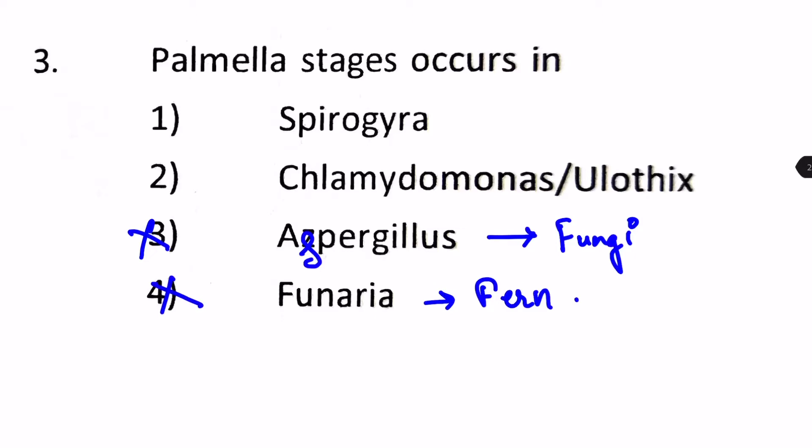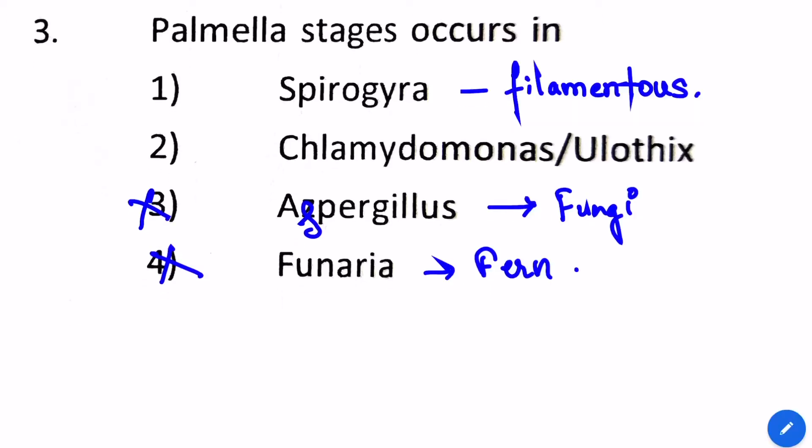The next one, we have Spirogyra and Chlamydomonas or Ulothrix. Spirogyra is actually a filamentous algae from Chlorophyta itself. And Chlamydomonas is the one which shows the Palmella stage.